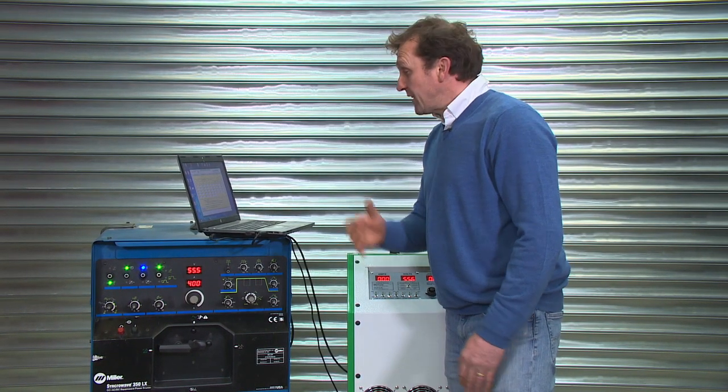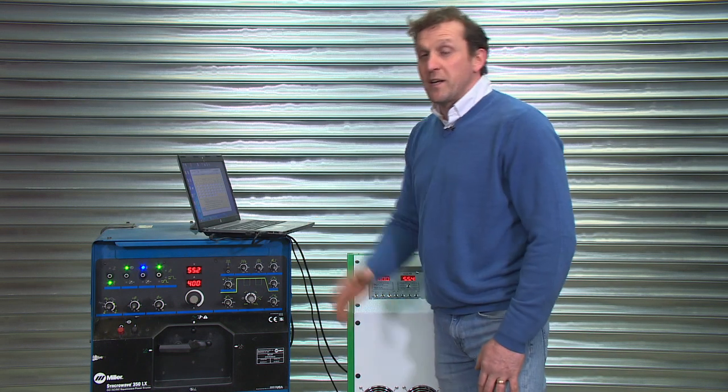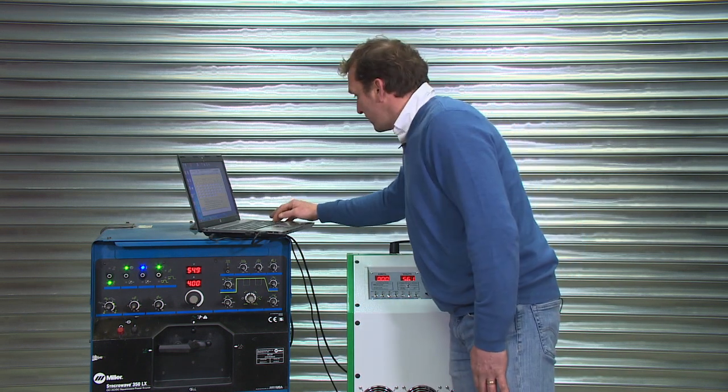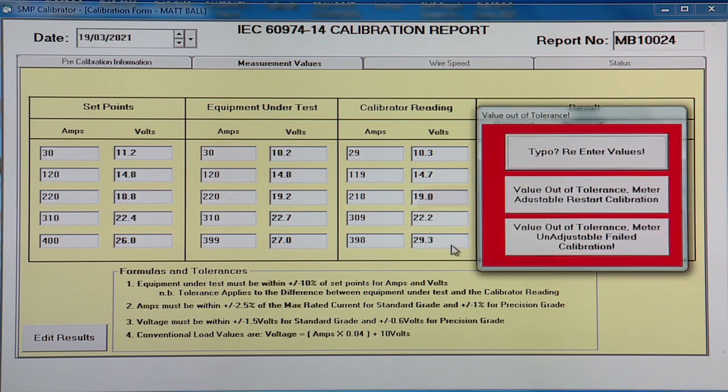And then just for training, instead of putting 26.3, if we put 29.3, a fail value in, the program will flag up immediately there for you. Was that a typo? Is that an error on my behalf? Is the value out of tolerance? But we can adjust the meter. If that was possible, we'd adjust the meter back into tolerance and restart the process again. Because obviously, all the values will have changed across the range.